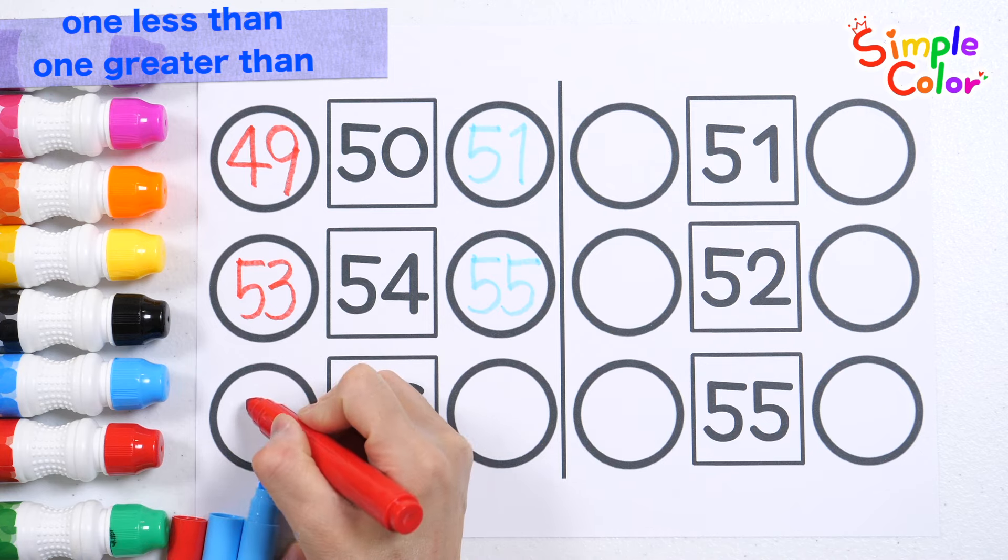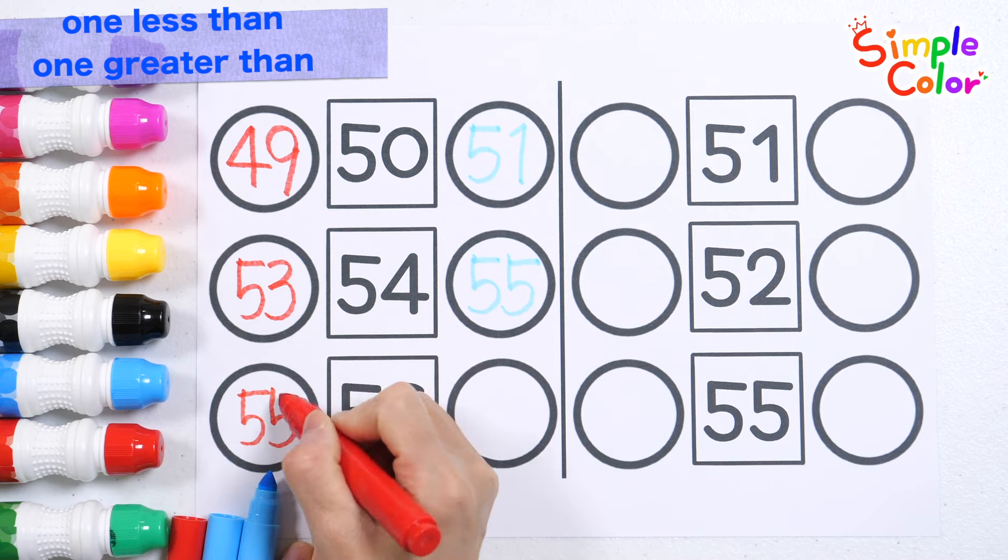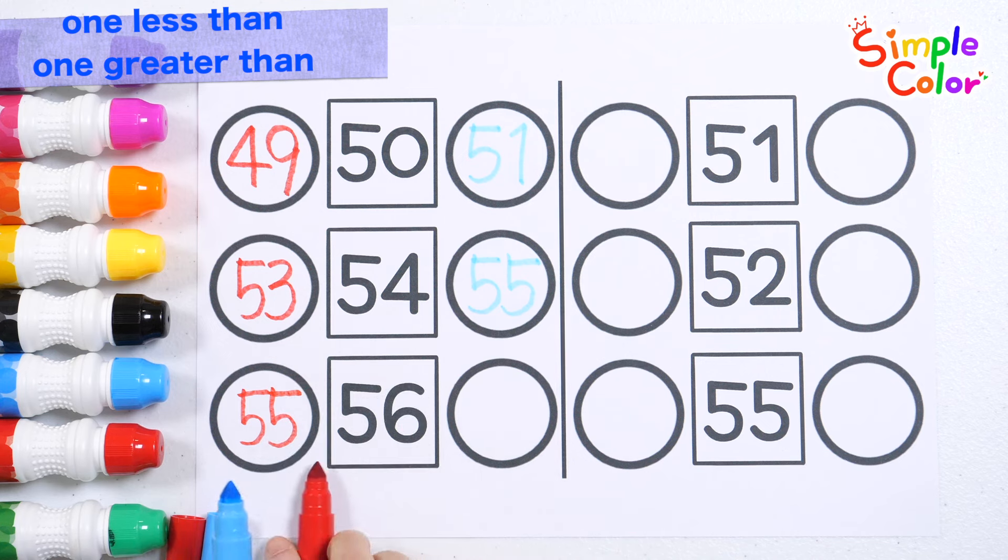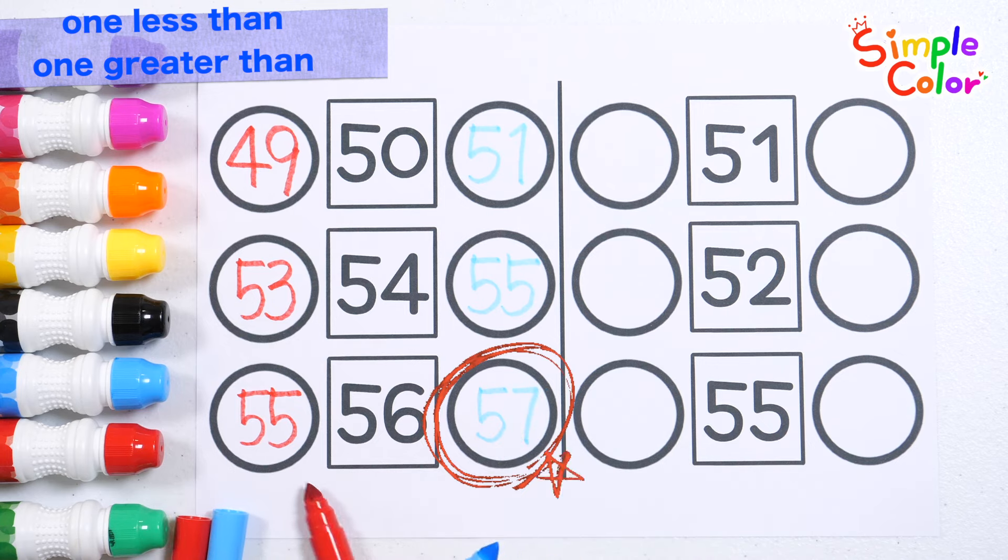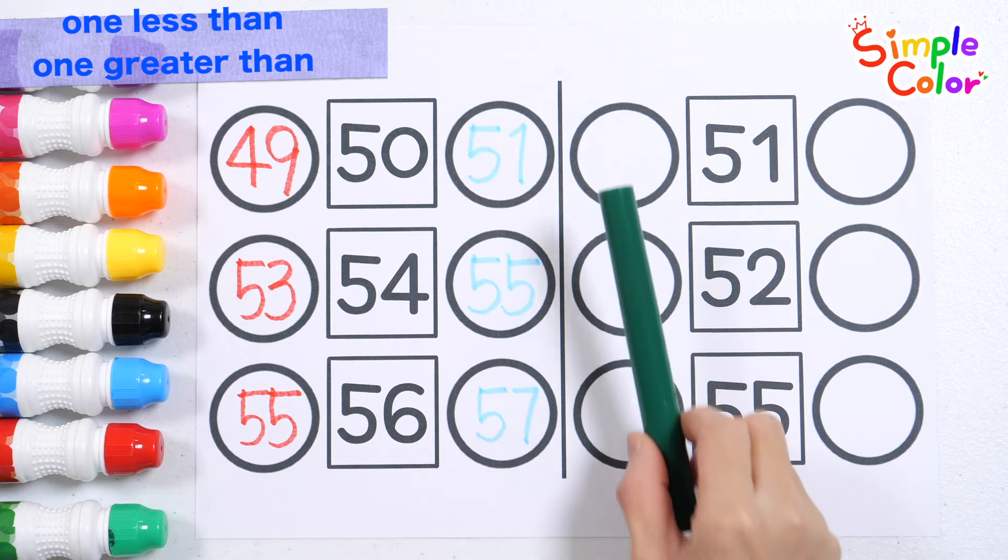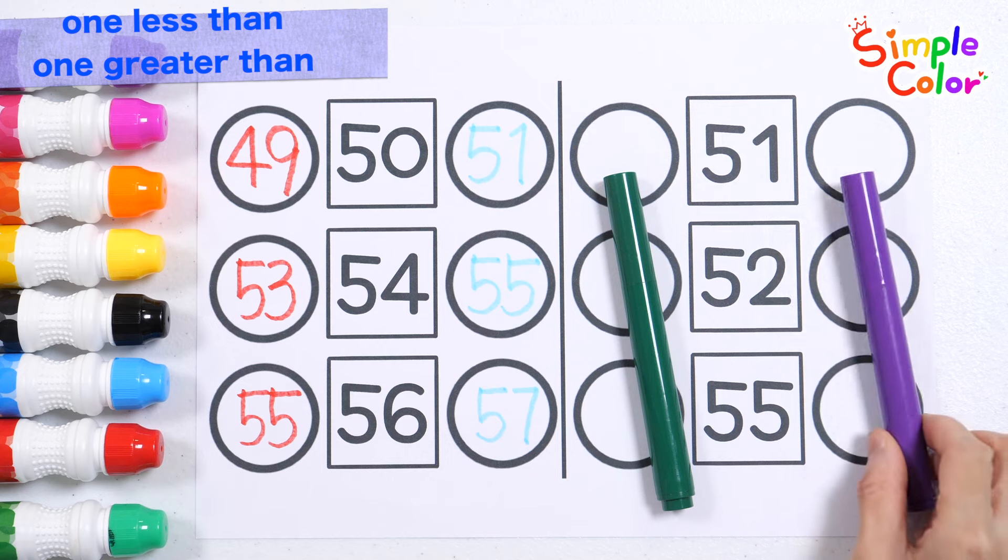56. What is one smaller number? 55. What is one bigger number? 57. This time, let's write the smaller number in green and the larger number in purple.